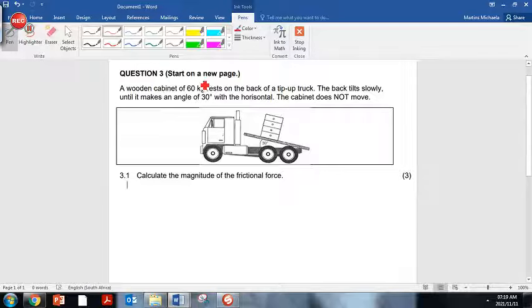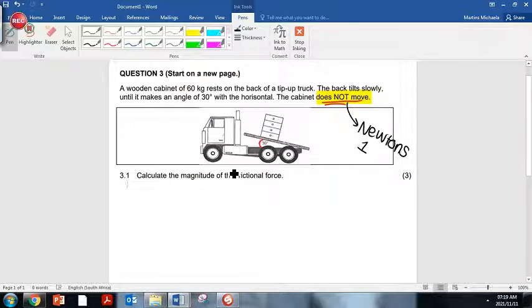We've got a wooden cabinet of 60 kilograms resting on the back of a tip-up truck. The back tilts slowly and makes an angle of 30 degrees with the horizontal. The cabinet does not move. First of all, this piece of information is vital - that the cabinet is stationary, it's not moving. This basically tells me that it's a Newton's first law question. Remember, we always need to identify whether we're doing Newton's 1 or Newton's 2. If the object is not moving, 100% Newton's 1.